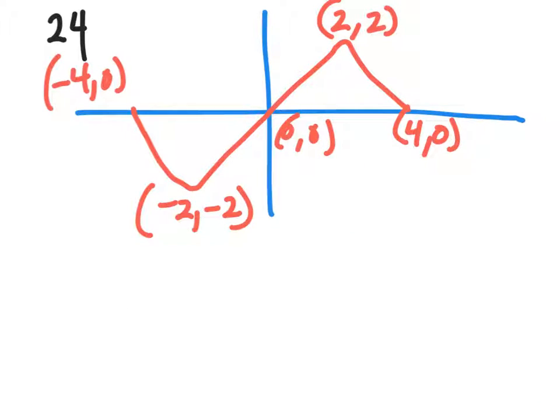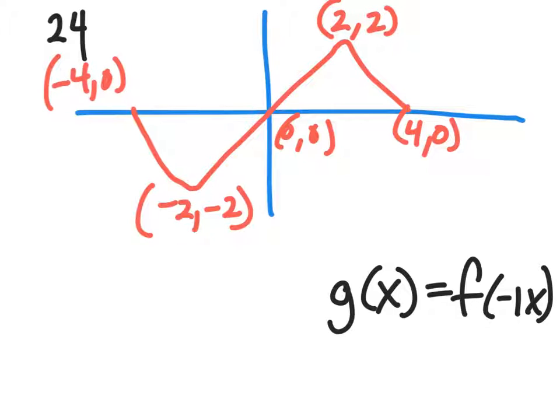For 24, we've got g of x is equal to f of negative x. I put negative 1x. We know that for x things we have to do the opposite of what's on the inside. So instead of multiplying by negative 1, I'm going to take each x coordinate and divide by negative 1.